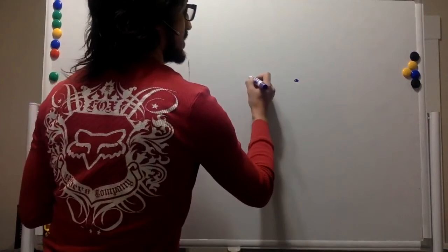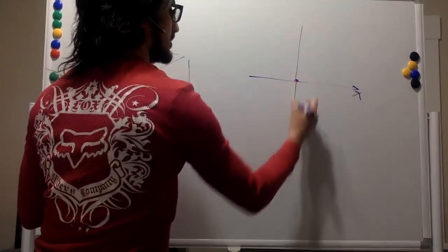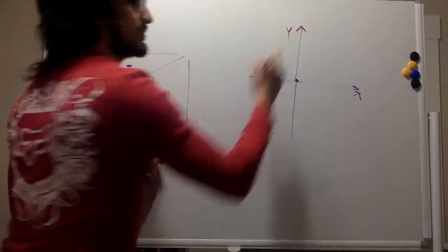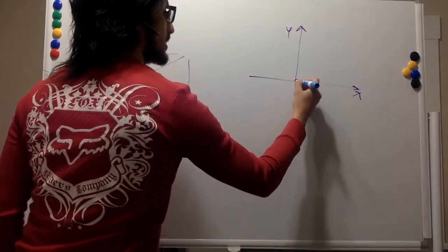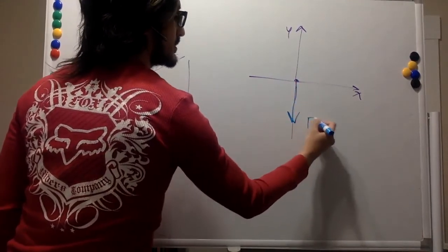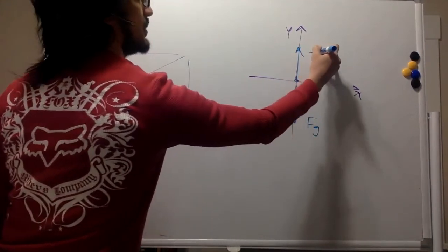So again, we have the x and the y-axis. Gravity is pulling down, and tension is pulling up. These are vectors.